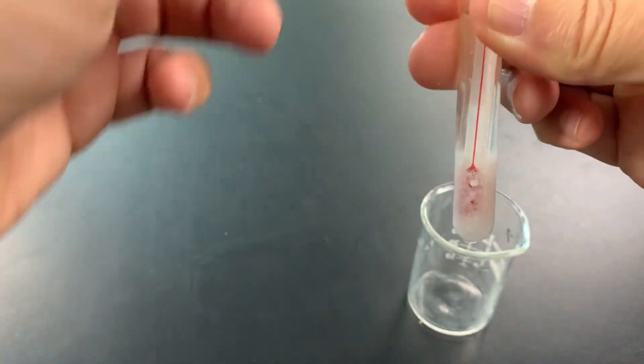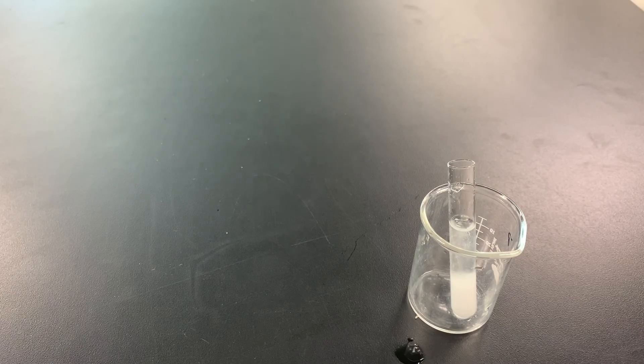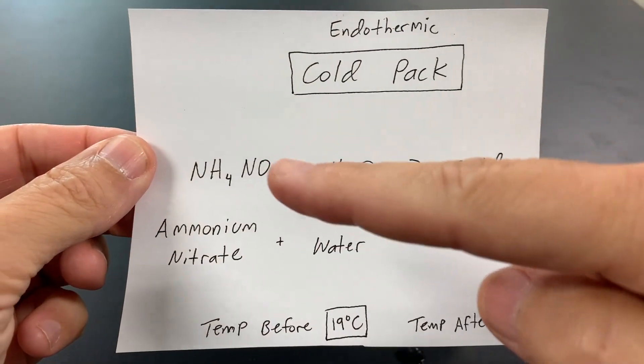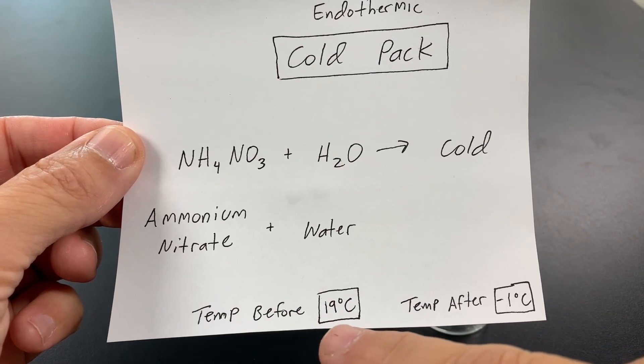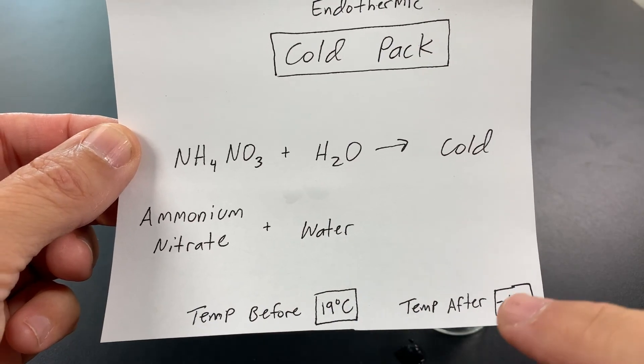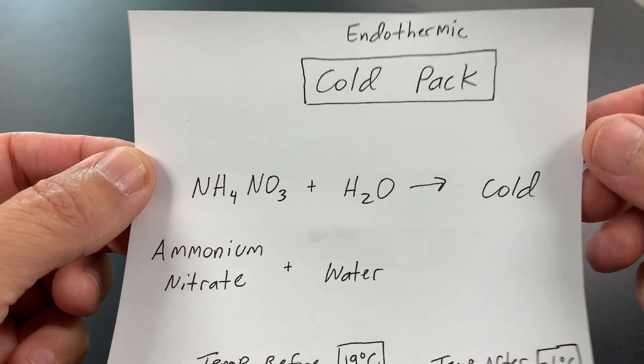Uh-oh, I must have broken the test tube. It's starting to leak. So we got negative 1 degrees. Let me write down the final temperature. Negative 1 degree Celsius. So here's our results for our cold pack. We put ammonium nitrate in water. Started off with a temperature of 19 degrees Celsius. And the temperature dropped 20 degrees down to negative 1 Celsius. Wow, that is really cool.